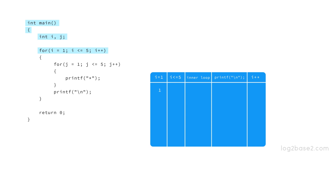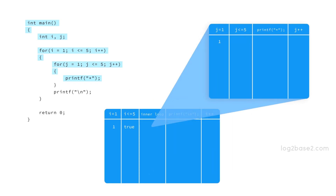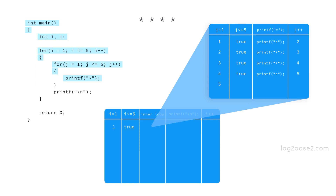First, i equals one and i is less than five, so we go inside. j equals one and j is also less than five, so it goes inside and prints a star. Then j is incremented to two — condition is true, prints another star. j becomes three — condition is true, prints a star. j becomes four — condition is true, prints a star. j becomes five — condition is still true, prints a star. Then j is incremented to six.